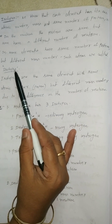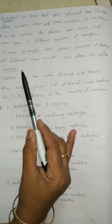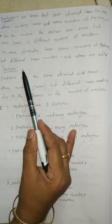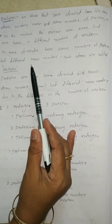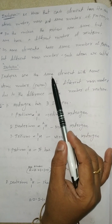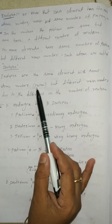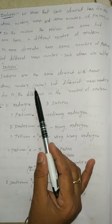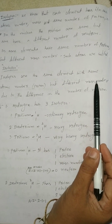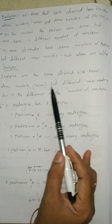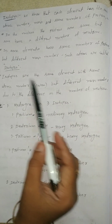Isotopes have the same atomic number but difference in the mass number. Why? Because the number of neutrons are different. Isotopes are the same element with same atomic number — same protons but different mass number — because of difference in the number of neutrons.